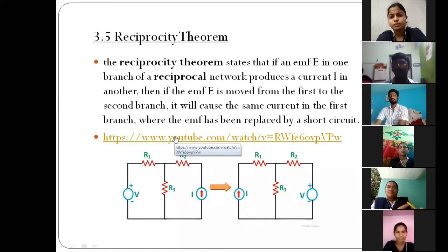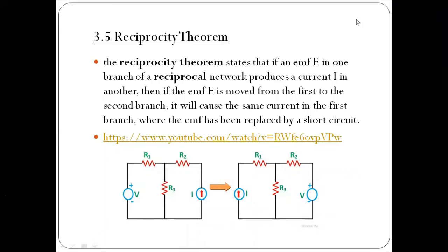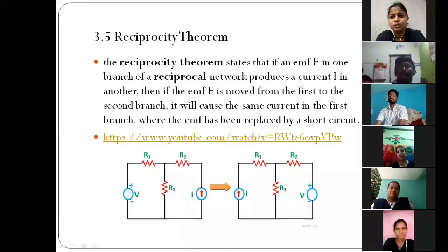Moving on to the reciprocity theorem — one of the most important theorems, asked for 7 marks. The reciprocity theorem states that an EMF in one branch of a reciprocal network produces a current I in another branch. If the EMF is moved from the first to the second branch, it will cause the same current in the first branch, where the EMF was replaced by a short circuit.